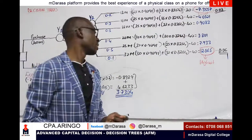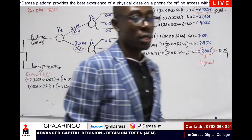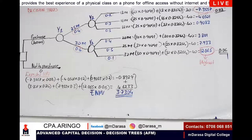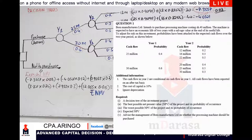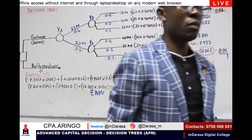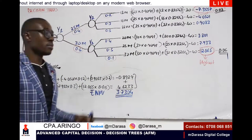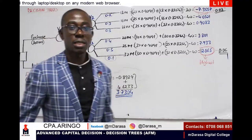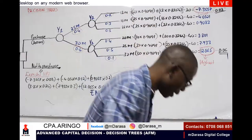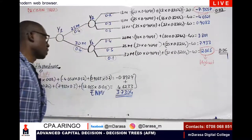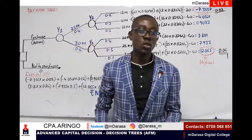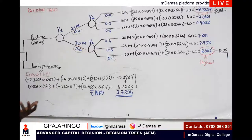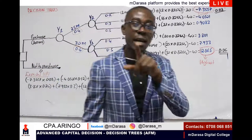The final part asks us to advise management of Bora Manufacturers Limited on whether to purchase the processing machine. Based on our NPV analysis, they should purchase this machine because it has a positive expected net present value of 3.7304 million. Therefore, they should proceed and purchase the machine. This question has covered the majority of concepts needed when handling decision trees.